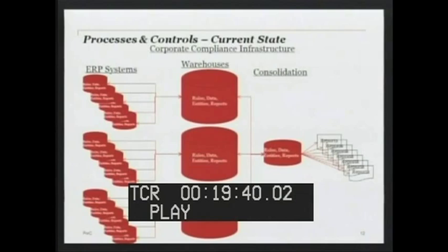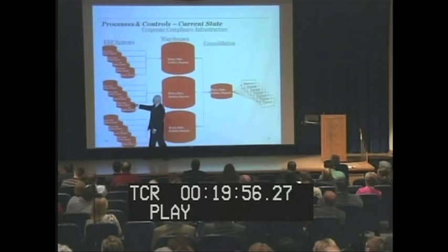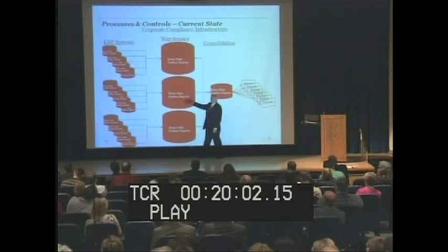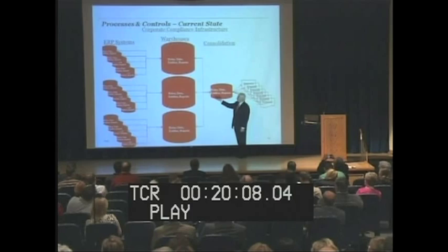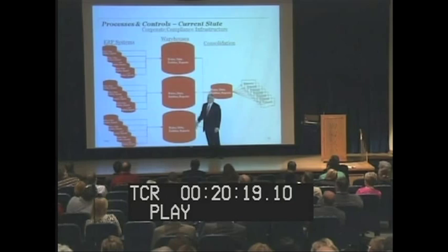So let's look at where that actually occurs. Processing controls today — a typical schematic. I have a piece of software, in this case some kind of warehouse, and in it I have business rules, data, entity descriptions, and some reports defined. Back over here I might have transaction systems of different types, all tied to this system — mapping tables. Then I consolidate them in something like Hyperion or Cognos or J.D. Edwards, and this thing produces reports. Does this look familiar? You may just have one of these, or one of those — but this is basically how it works.